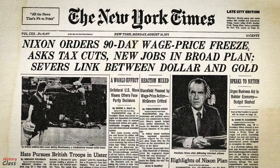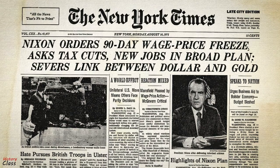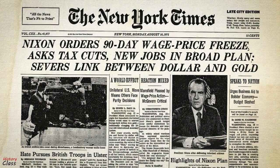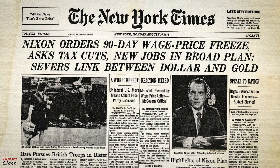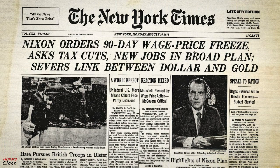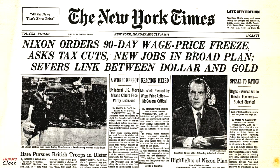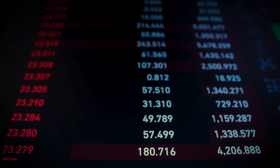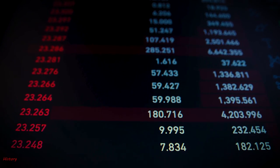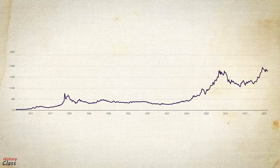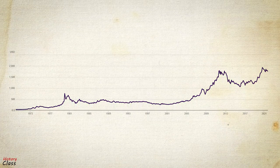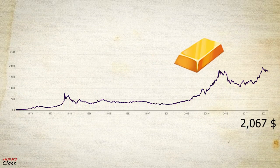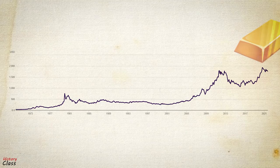In August 1971, United States President Richard Nixon announced the unilateral cancellation of the direct international convertibility of the US dollar to gold. Since then, the US dollar, and thus all national currencies, are free-floating currencies. The price of gold per ounce increased from $35 in 1970 to $2,067 in 2020.